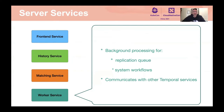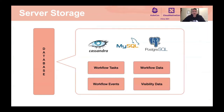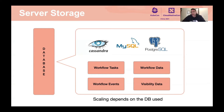As far as storage goes, Temporal does not store your application code or serialized code. All your code runs in your applications. The server storage stores information like events in the execution history of your different services and applications. Temporal currently supports Cassandra, MySQL, and PostgreSQL for storage, and scaling options depend on the database you choose.